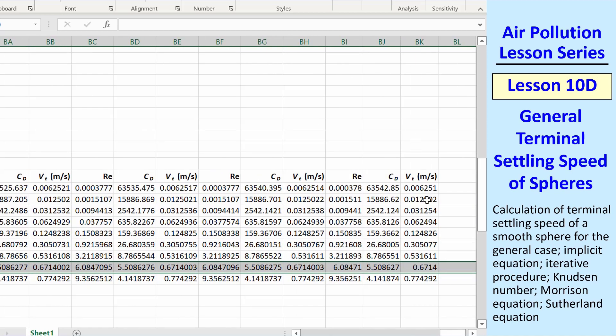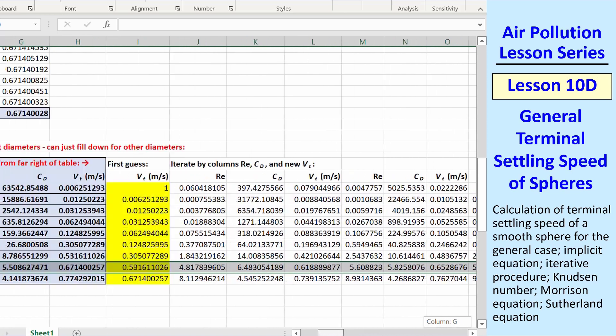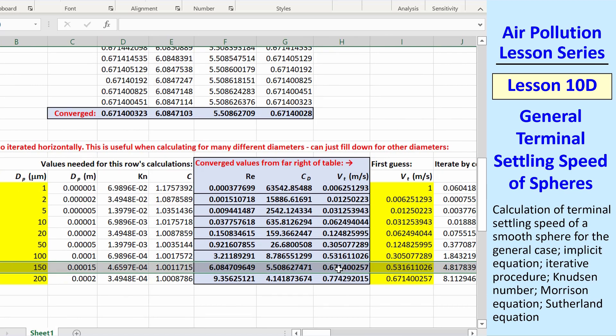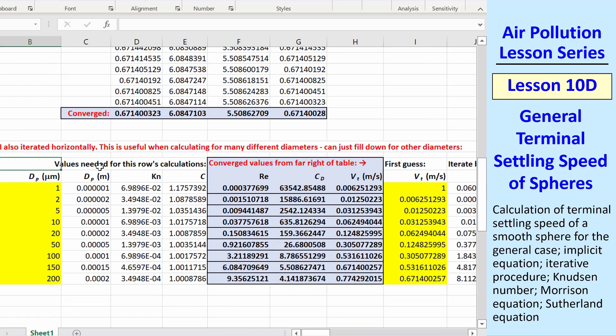I finally stop at column BK. And if we scroll back, we see that my final value for vt refers to that cell. This horizontal iteration method is best when you're doing a number of particle diameters.